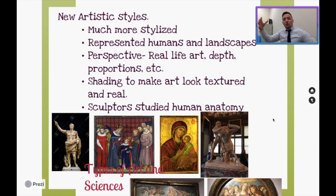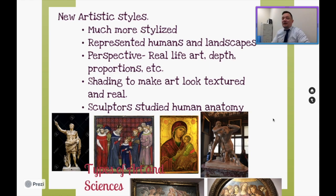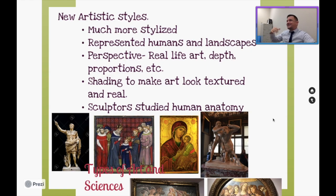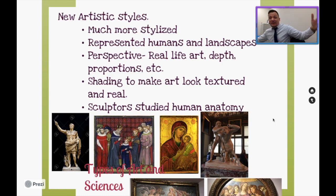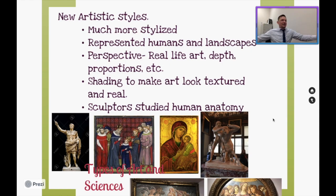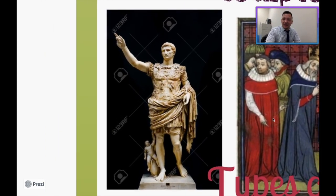All the art originating from the Renaissance period mirrored old Roman and Greek art and was much more stylized than during the Middle Ages. It represented humans and landscapes in both two-dimensional and three-dimensional ways, with vanishing points and multiple layers. Perspective was used — depth, proportions, and shading — to make art look more textured and real. Sculptors also studied human anatomy, like Leonardo da Vinci's Vitruvian Man, to figure out proportions — measuring the body to find the height from fingertip to fingertip. It all mirrors the ideals of the ancient Romans.